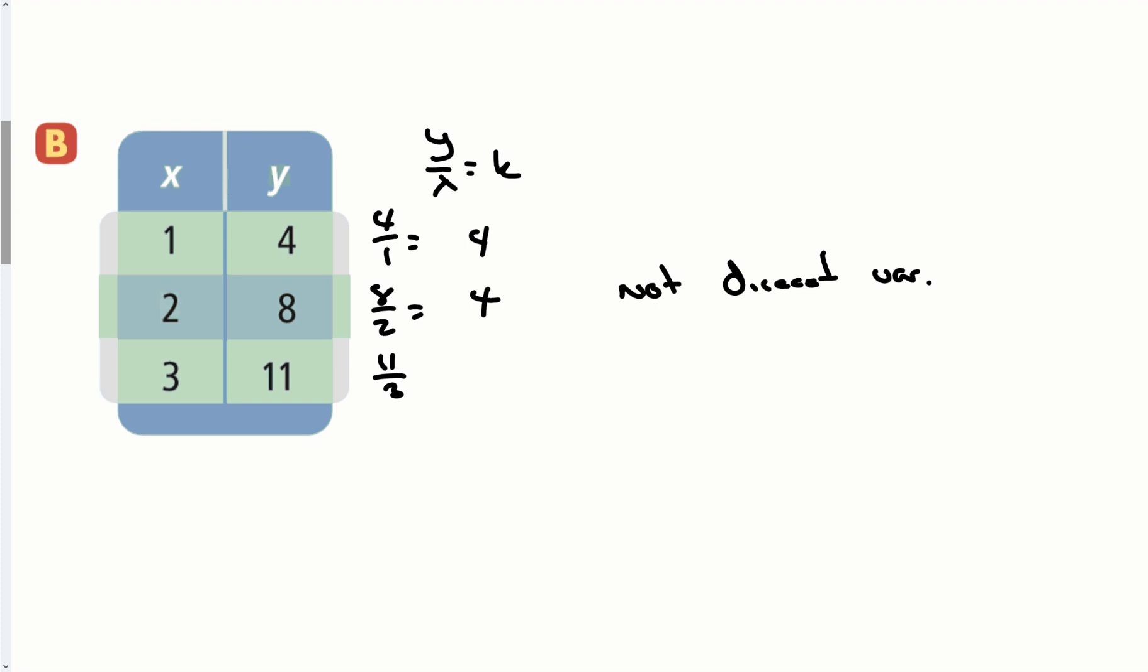So y does not vary directly with x. It's okay. It's still data, still a relation, still a function - every x has one answer y. It's just not this specific type of relationship, direct variation.